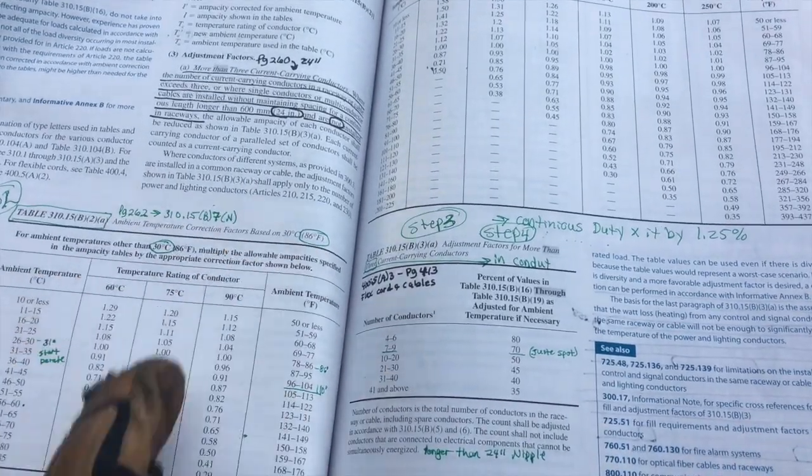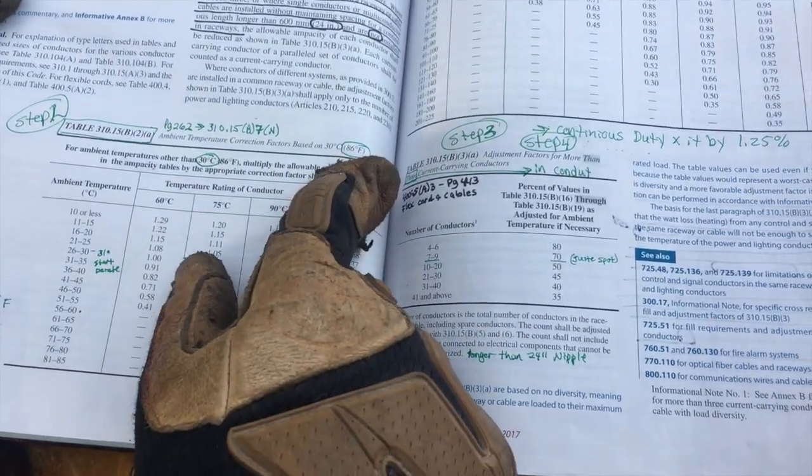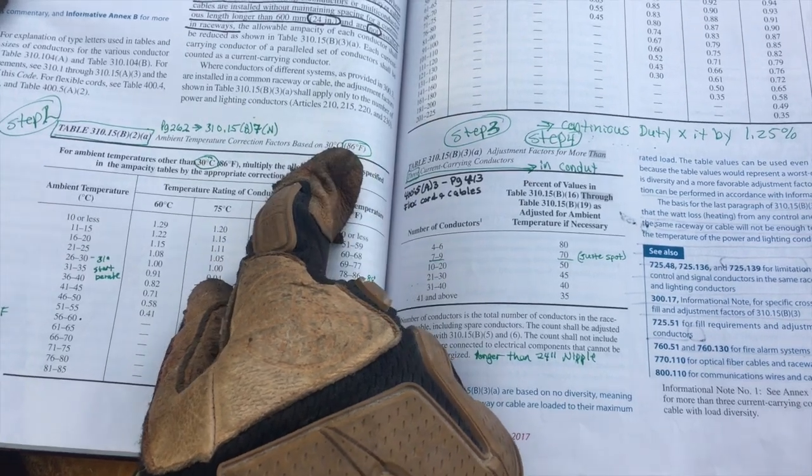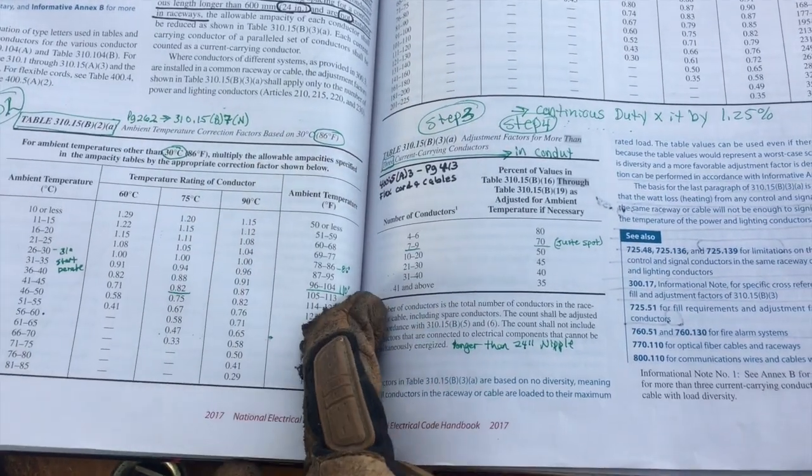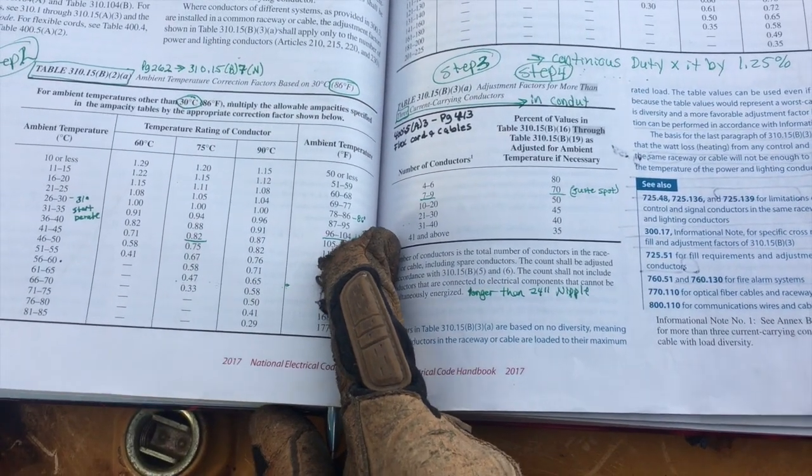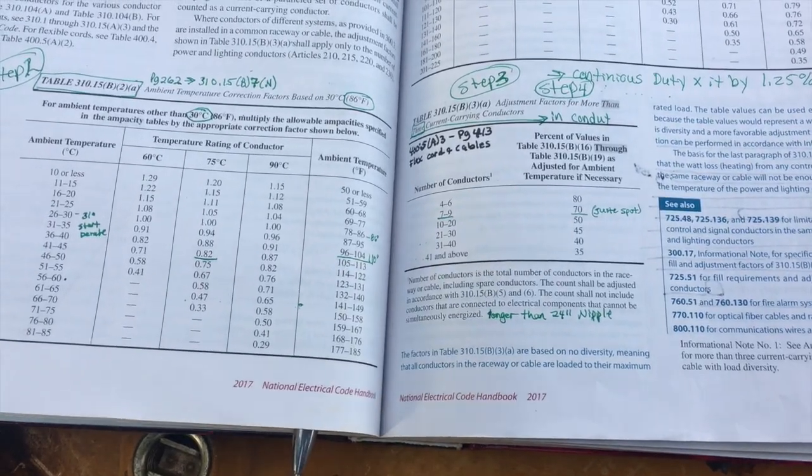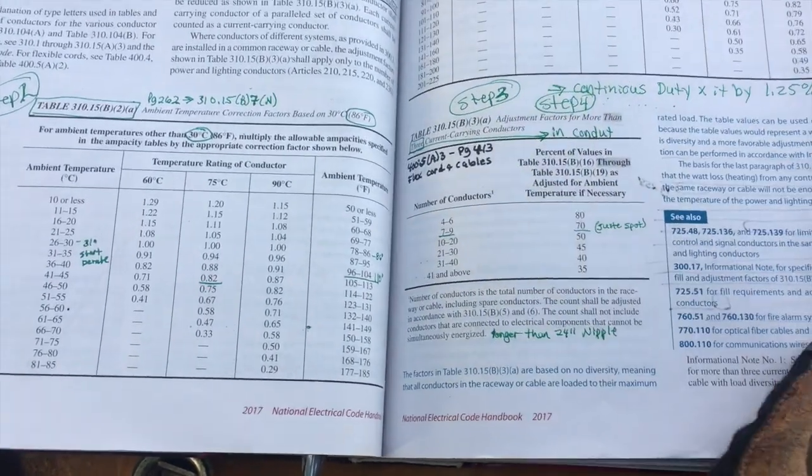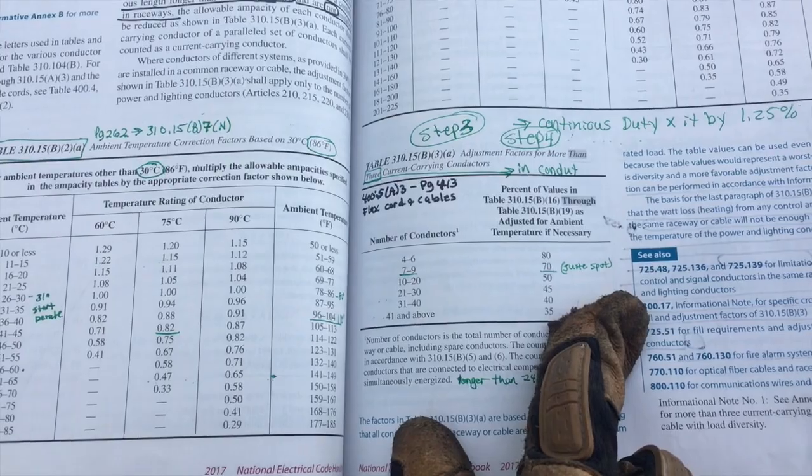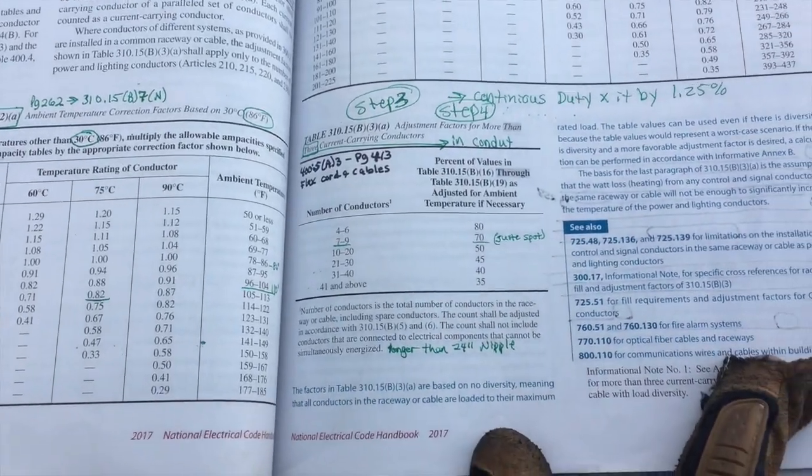Your ambient temperature rating, if you're 30 to 86 degrees Fahrenheit, 30 degrees Celsius, 86 degrees Fahrenheit, as soon as you get to about 100 degrees in Colorado, then you'd be concerned. You also look at how many current carrying conductors are in a conduit like I told you, that ties to 400.5.